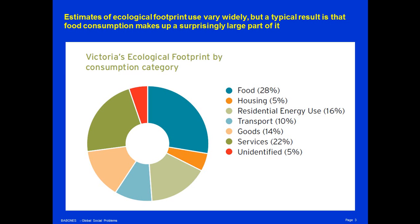Estimates of ecological footprints vary widely, but a typical result is that food consumption makes up a surprisingly large proportion — over one quarter. Food, housing including energy use — that is heating and lighting your house — and transportation usually account for more than half of the total ecological footprint.